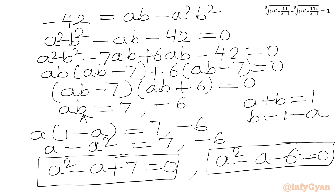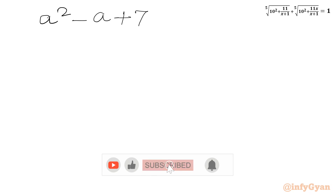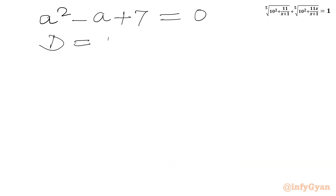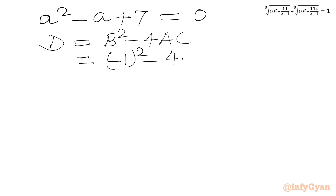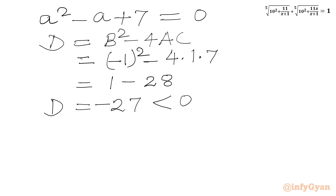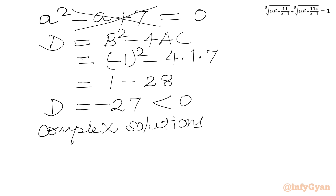Solving the first quadratic a² - a + 7 = 0, we check the discriminant: b² - 4ac = (-1)² - 4(1)(7) = 1 - 28 = -27. The discriminant is negative, so we get complex solutions. Since we are looking for real values only, we reject this quadratic equation.